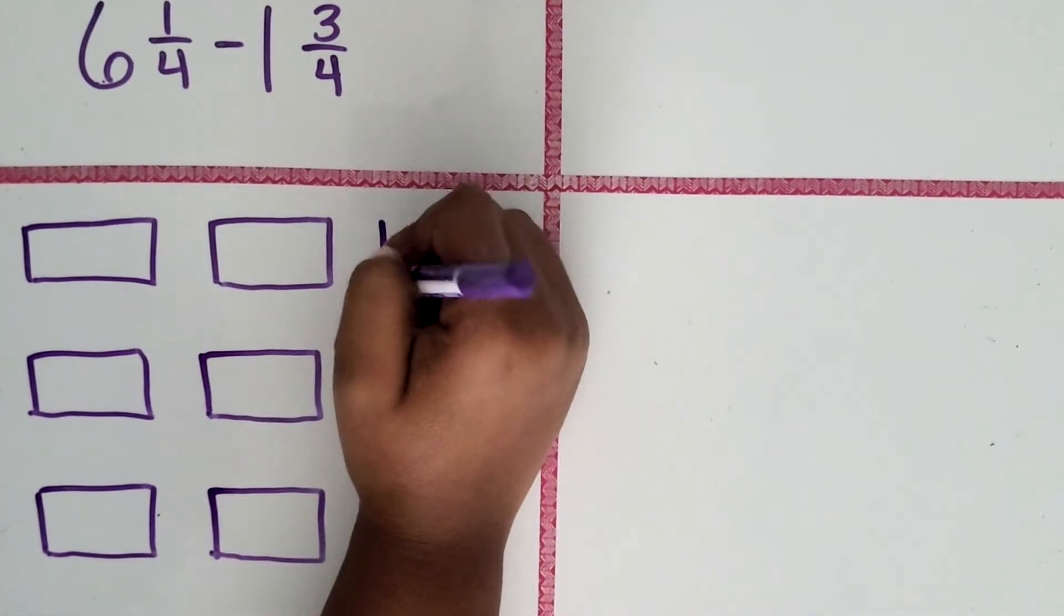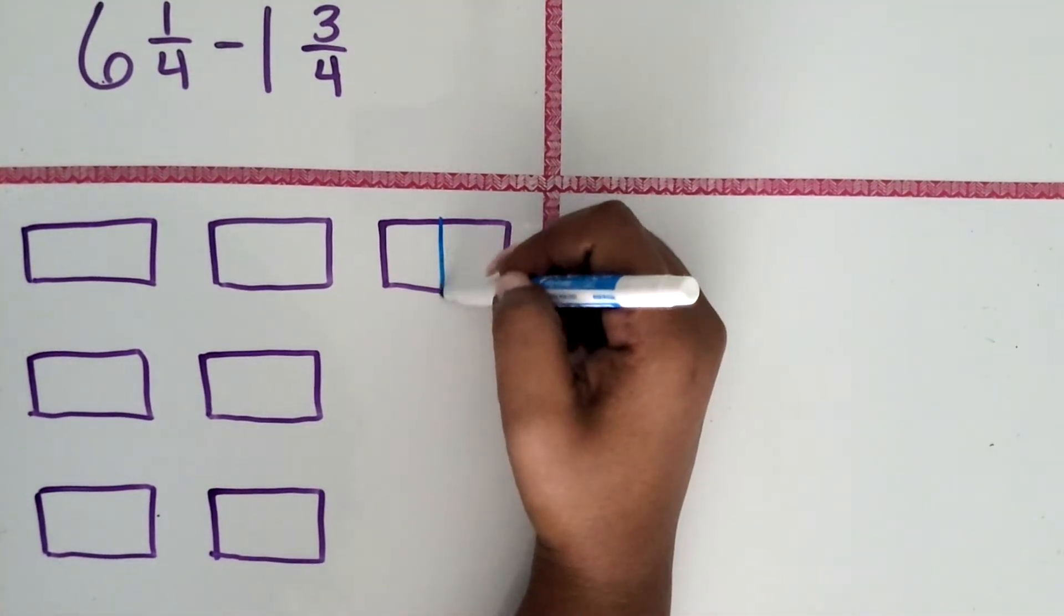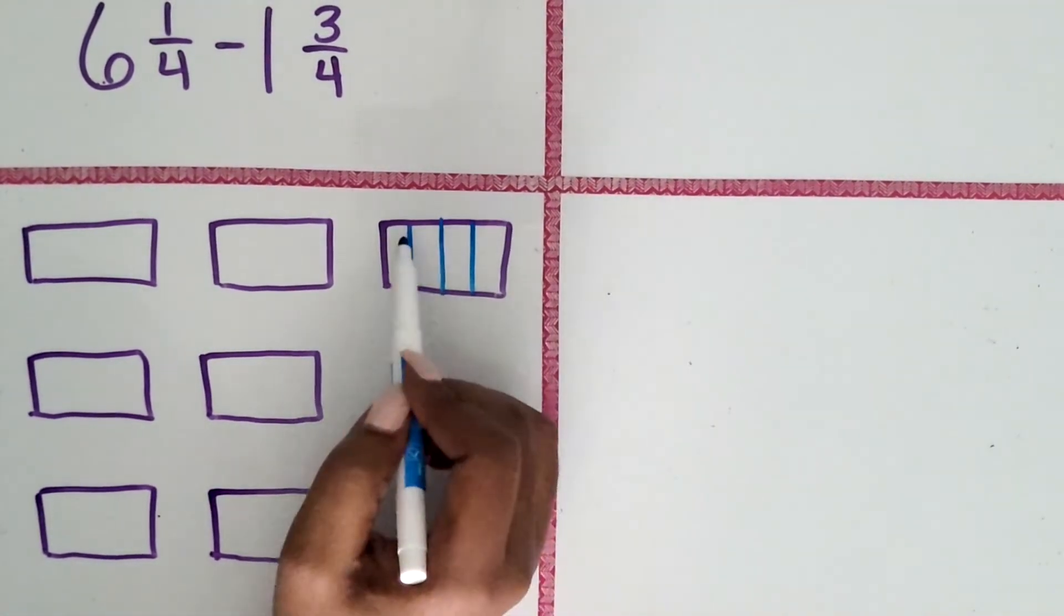And then we're going to draw another one so that we can show the one-fourth. So we have six wholes. And then with the seventh one, we're not going to think of it as a whole, but we're going to partition it into four equal parts and then shade in one-fourth.